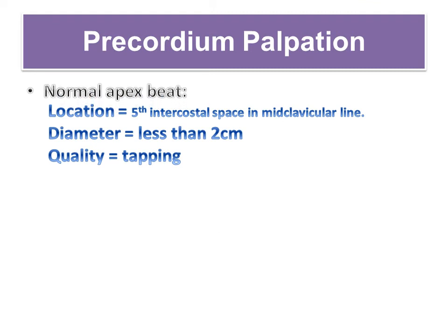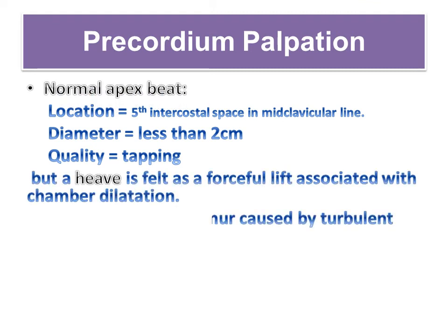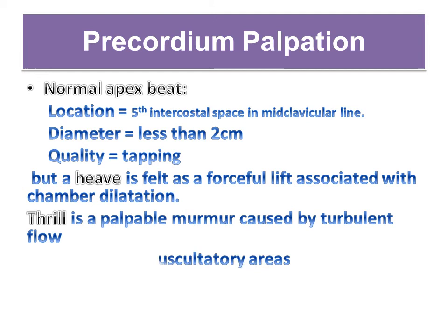Use the back of your fingers to feel the apex beat. In children older than seven, this is usually found in the fifth intercostal space in the mid-clavicular line. Deviation away from this may indicate right, left, or generalized ventricular enlargement. If the apex beat is difficult to find, ask the child to roll over onto their left side and breathe out. The cardiac impulse should be felt as a tap, while a heave is felt as a forceful lift.